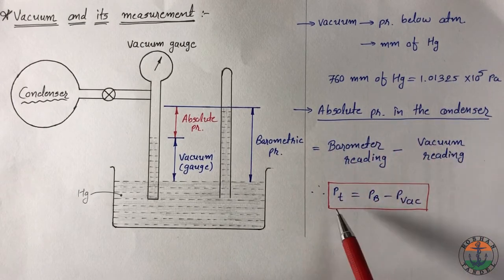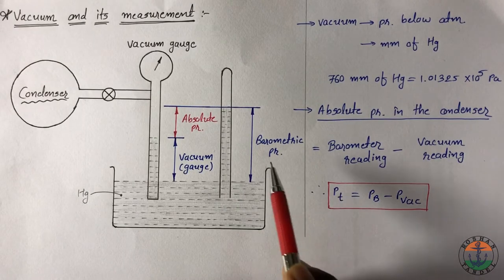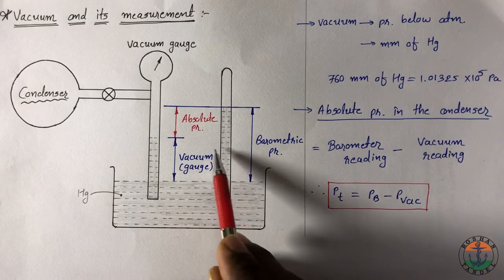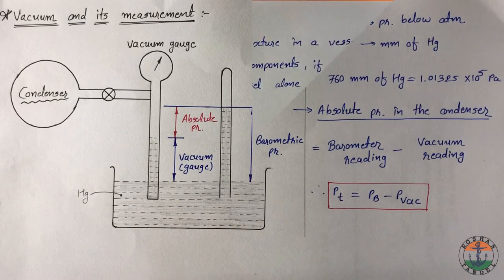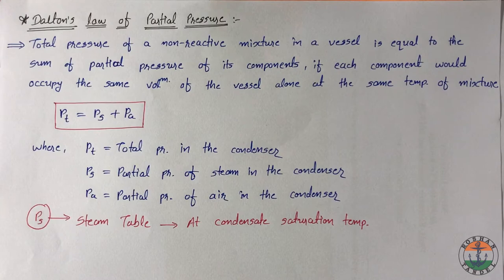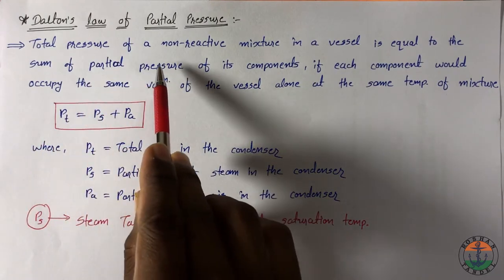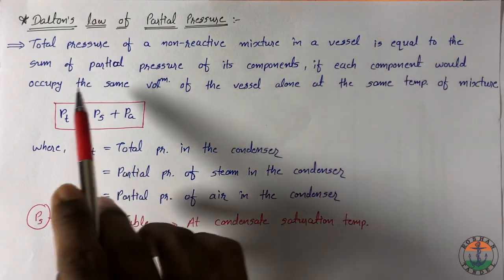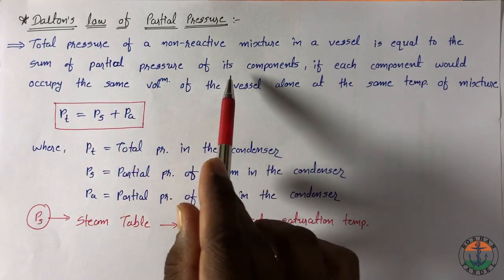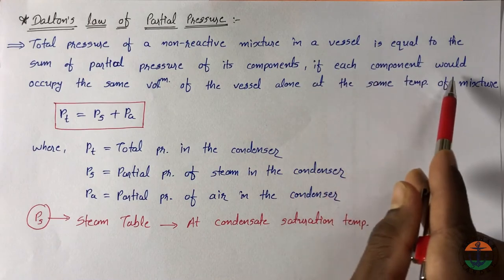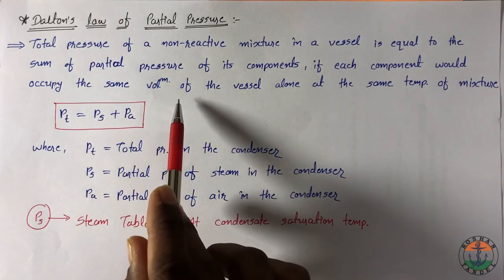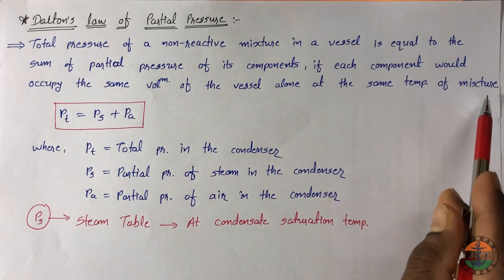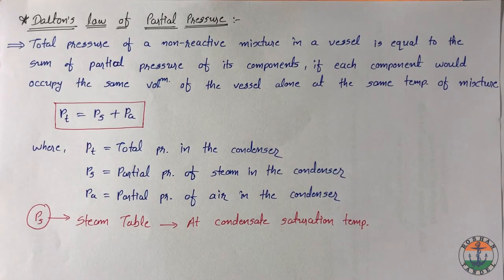Absolute pressure in the condenser Pt is calculated by barometer reading Pb minus vacuum reading. Dalton's law of partial pressure states that total pressure of a non-reactive mixture in a vessel is equal to the sum of partial pressure of its components if each component would occupy the same volume of the vessel alone at the same temperature of mixture.